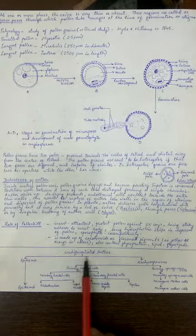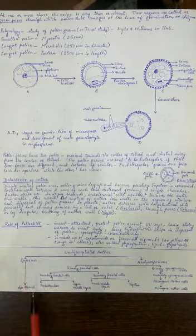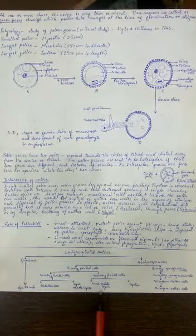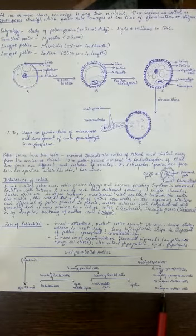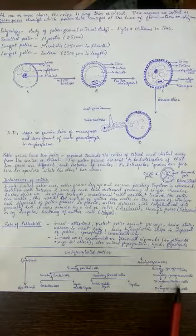The anther will always have the wall made up of epidermis, endothecium, middle layers, tapetum. And inside, we will have the sporogenous tissue. That tissue is called as the microspore mother cells. I hope this much is clear to you.